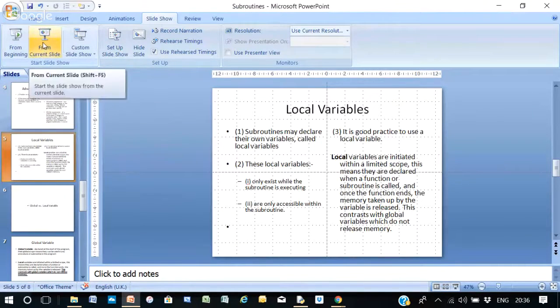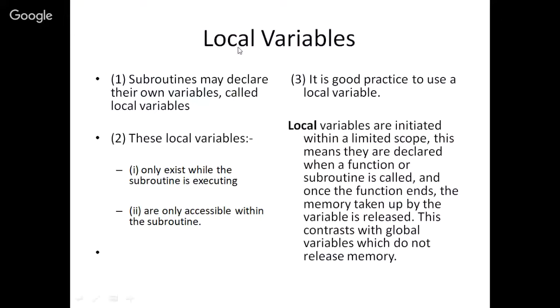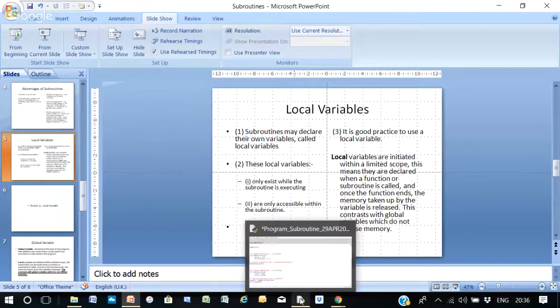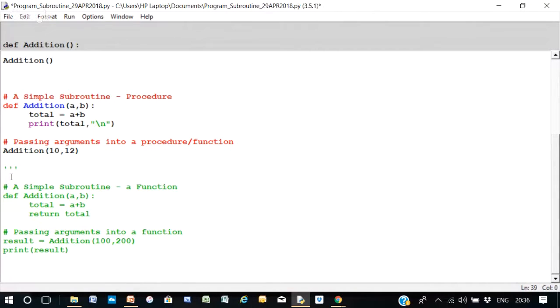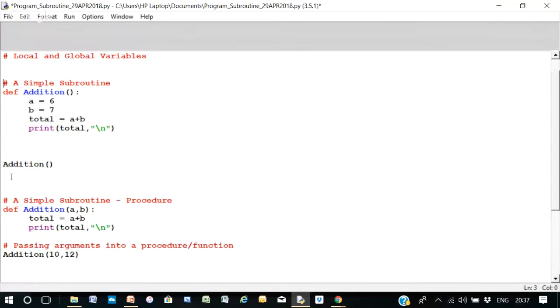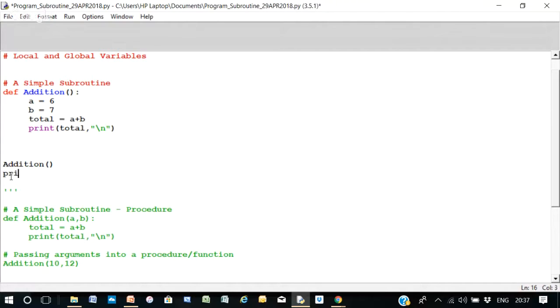Now, this brings us to the concept of local variables. Now, let's see what a local variable is, and that can be done in the context of a subroutine. Now, if we've got this subroutine here, and can you see a and b are within that subroutine addition? Now, if I write here print a, and I run that.